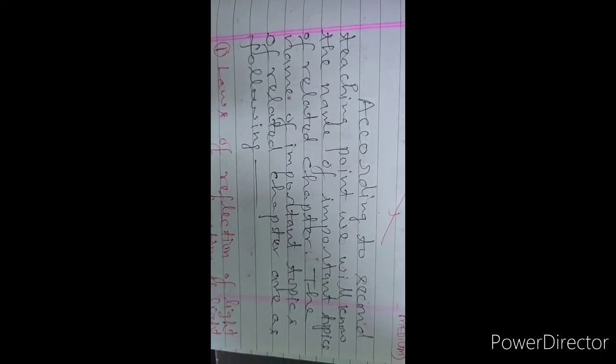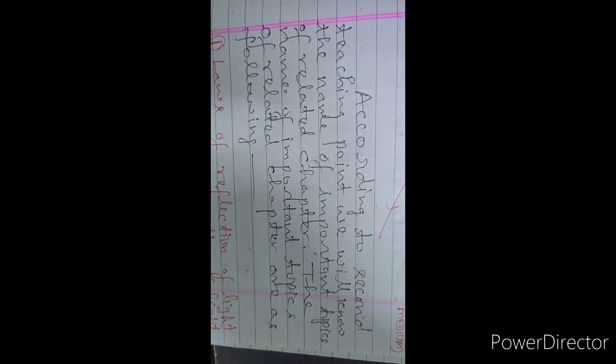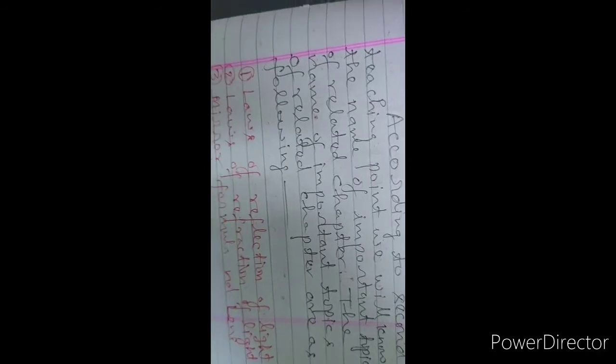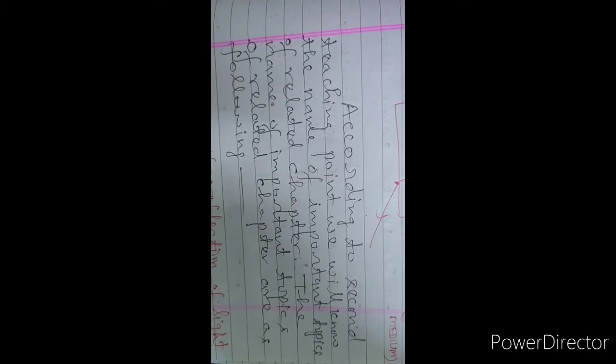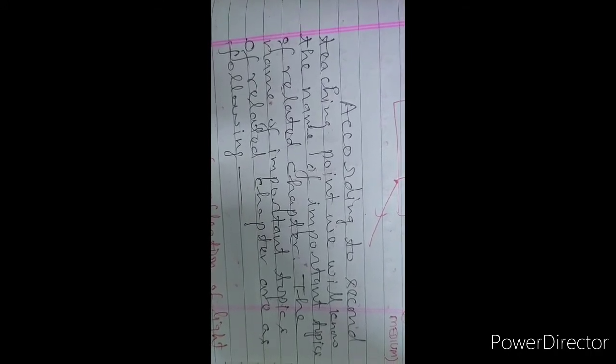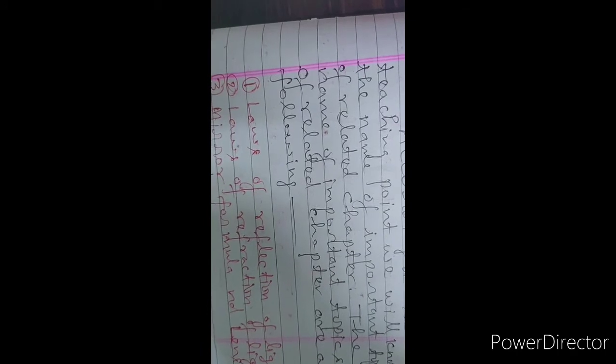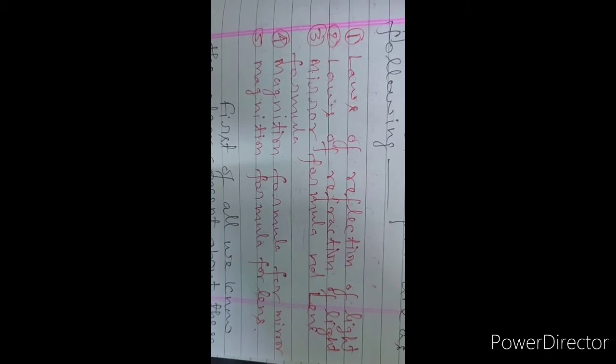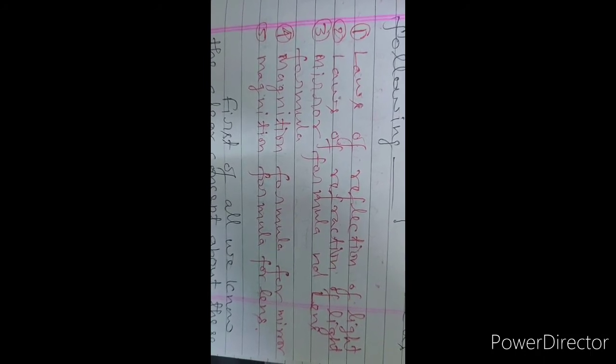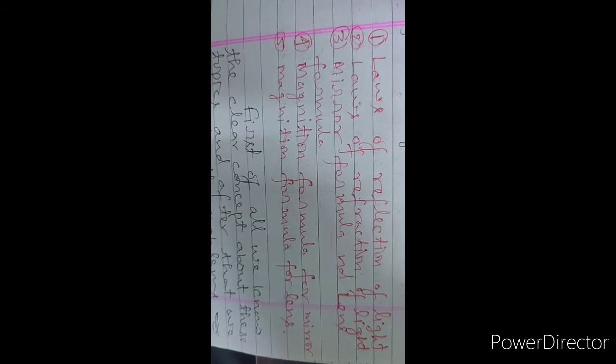According to the second teaching point, we will know the names of the important topics of the related chapter. The important topics of the chapter are as follows: First, the laws of reflection of light. Second, the laws of refraction of light. Third, mirror formula and lens formula. Fourth, magnification formula of mirror. And fifth, magnification formula for lens.